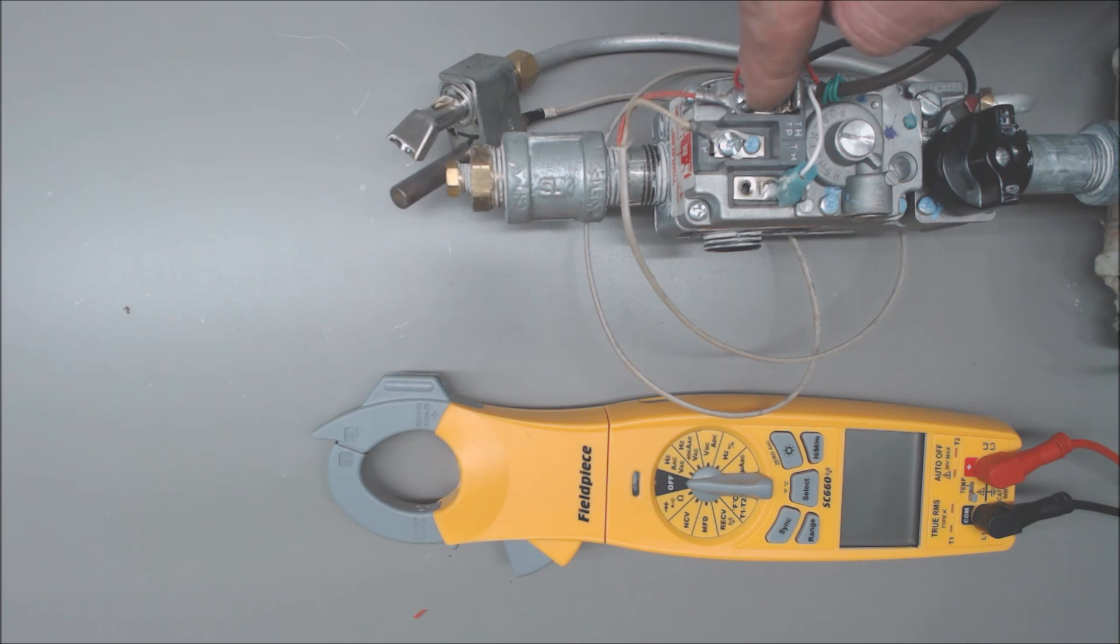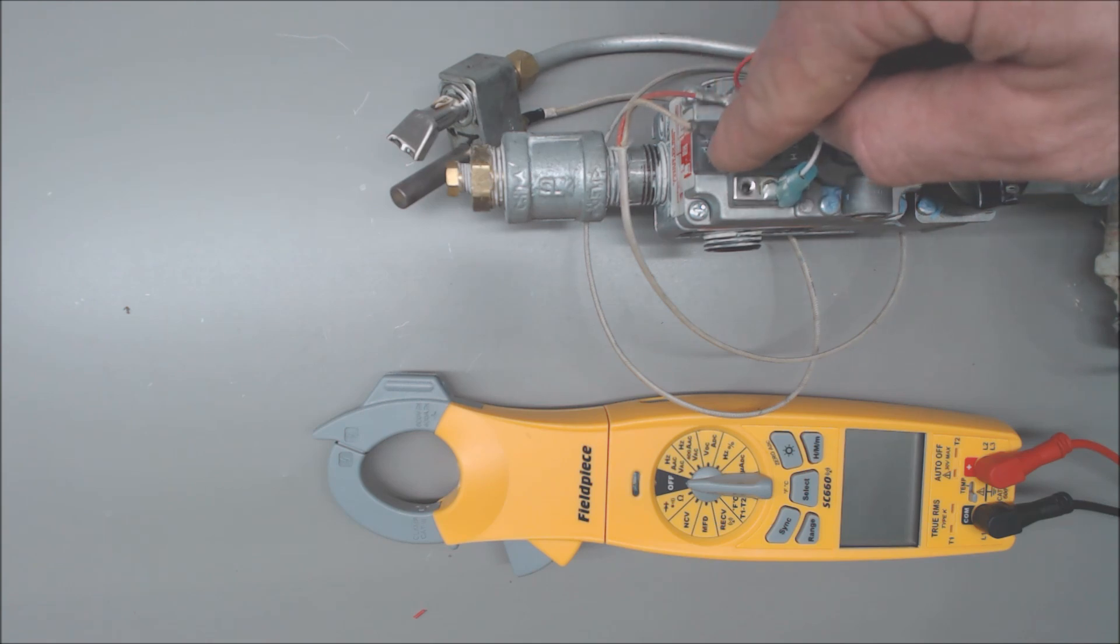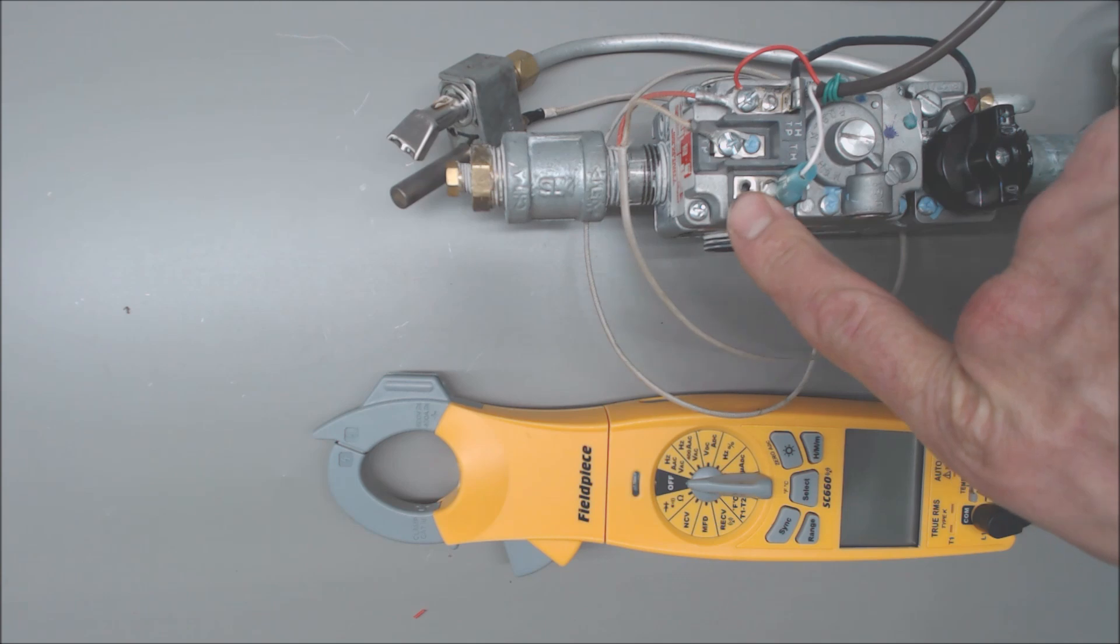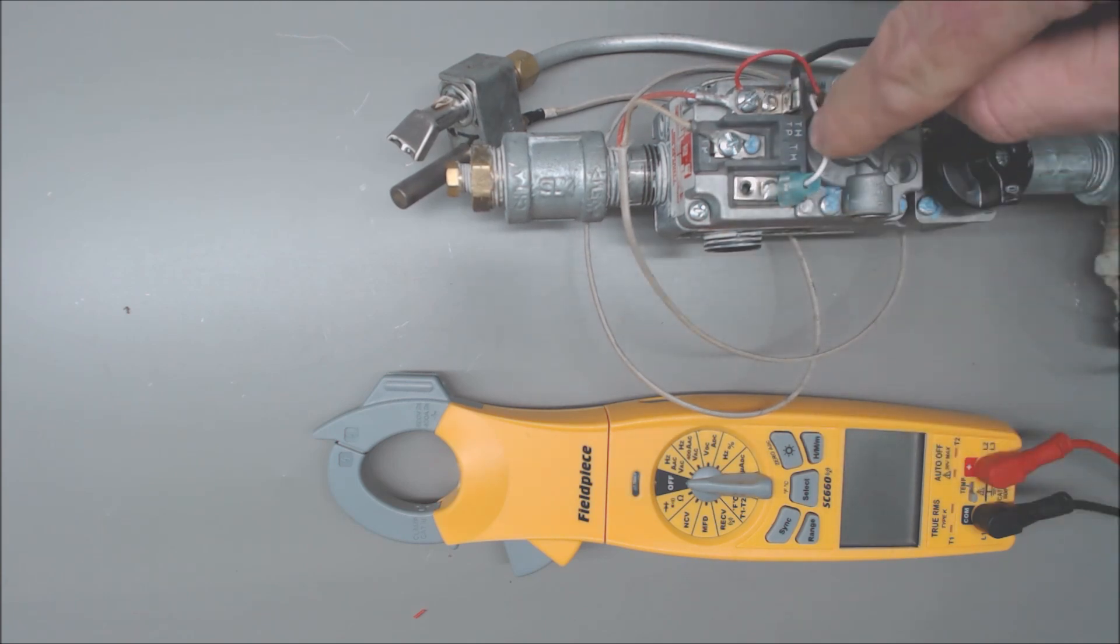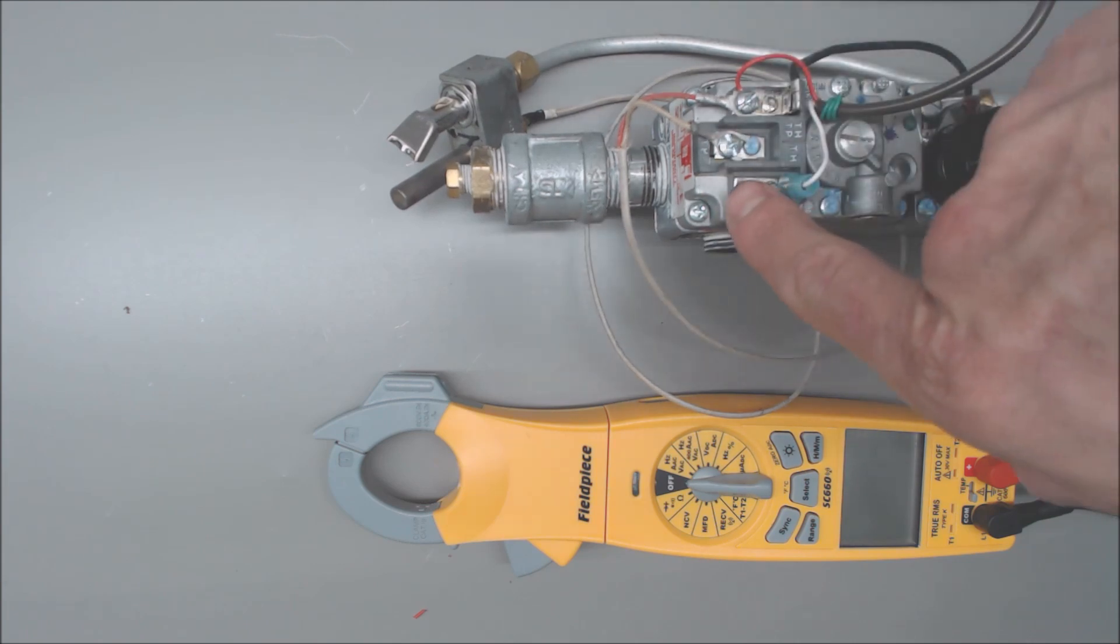P is for pilot valve. In the middle you have TH TP, which is your common between your pilot valve and your main gas valve. Your main gas valve is called the TH. If you can read it, it says TH right here.